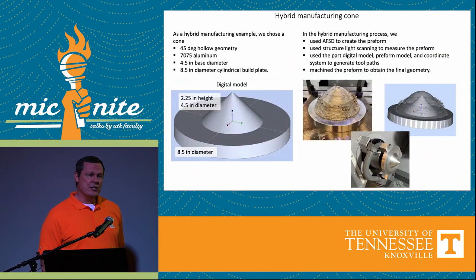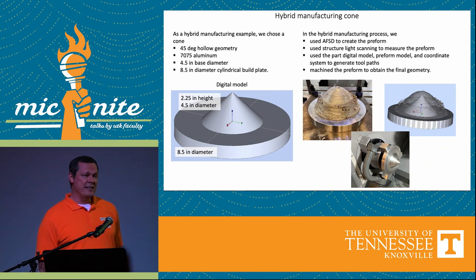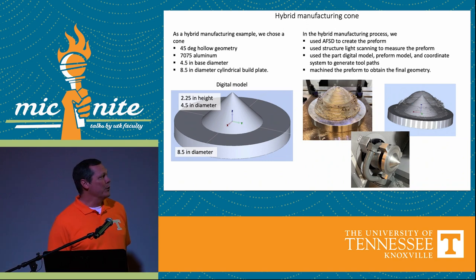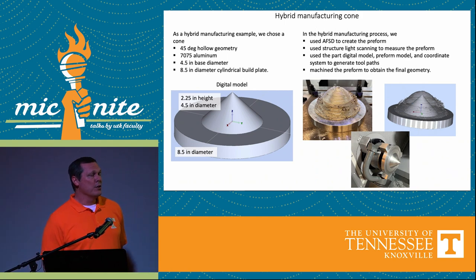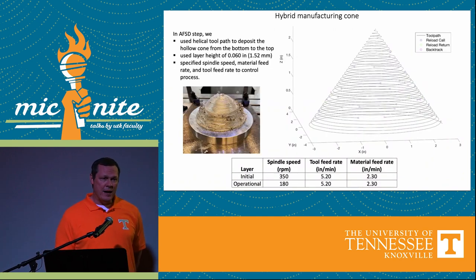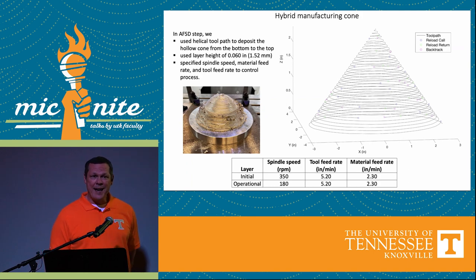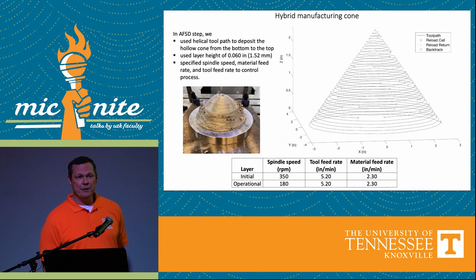This is a second geometry — a cone — and we again use this deposit-measure-machine strategy in order to make that part, which is relevant to hypersonics, an important area for research right now. On the right are the tool paths that we followed to deposit this hollow cone. On the left is the result that we got after we deposited the material using the additive friction stir deposition approach.